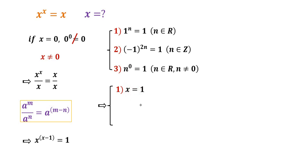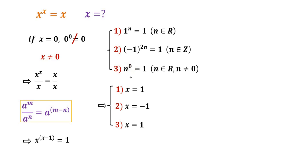For the first case, the base x is equal to 1. For the second case, the base is equal to negative 1, so x is equal to negative 1. In the third case, the exponent x minus 1 is equal to 0, so x is equal to 1. Based on these three cases, we have x is equal to positive or negative 1.